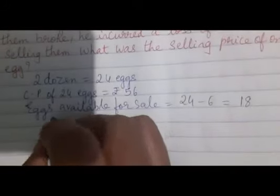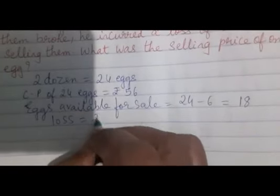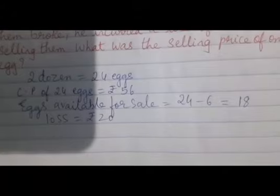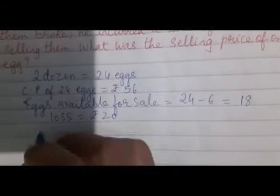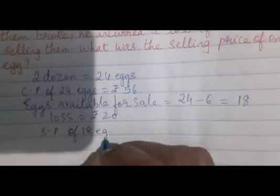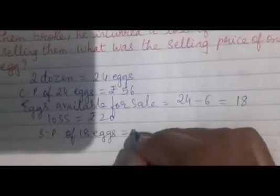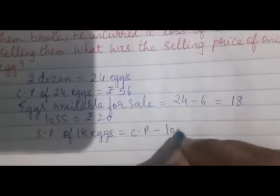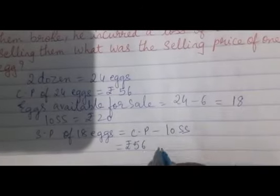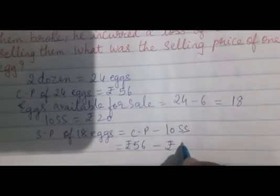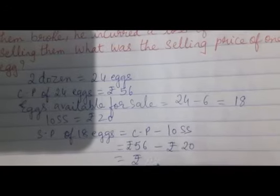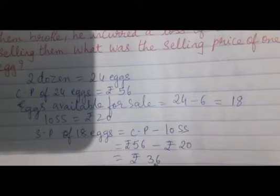He incurred a loss of Rs.20. We have to find the selling price of 18 eggs, which equals cost price minus loss. The cost price was Rs.56, he incurred a loss of Rs.20, so it comes to Rs.36.